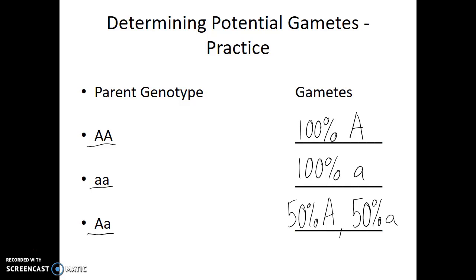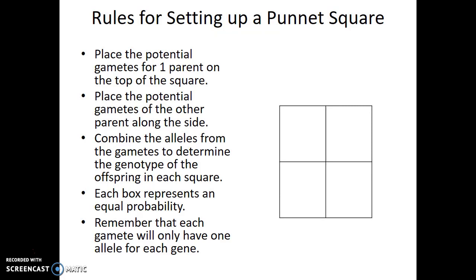We can use this information when we set up a Punnett square. Punnett squares are visual probability calculators. Punnett squares can allow us to visually see what the possible offspring options will be when we know the genotypes of a parent. And so, to set up a Punnett square, first we need to know the parent's genotypes.